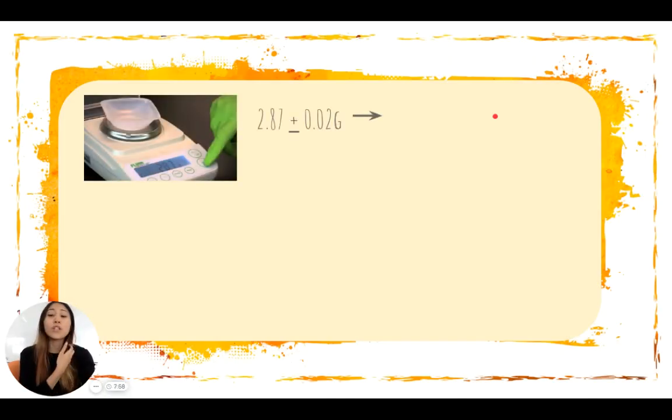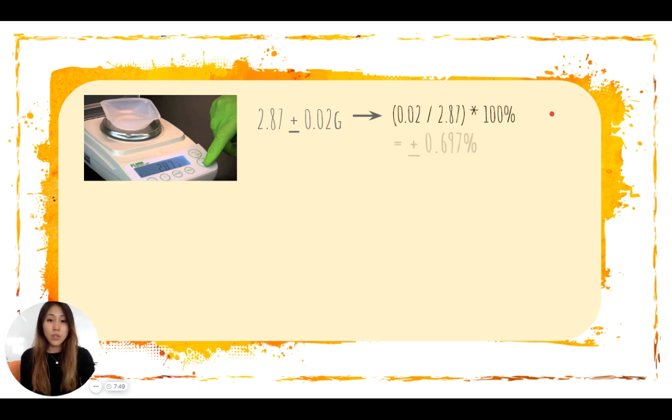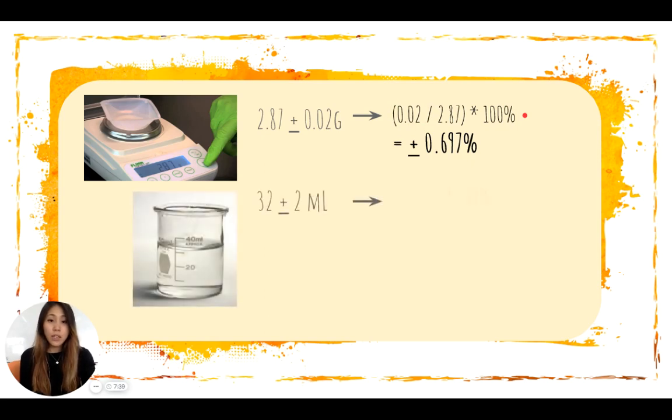So let's first convert these values into relative uncertainties. We have 2.87 plus or minus 0.02 grams. This gives us a relative uncertainty of 0.697%. We see that this is accurate to one significant figure, so this means our final value needs to be one significant figure as well.